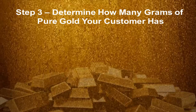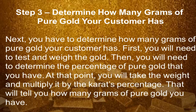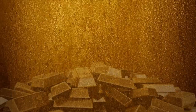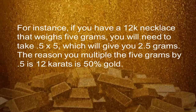Step 3: Determine how many grams of pure gold your customer has. You have to determine how many grams of pure gold your customer has. First, you will need to test and weigh the gold and determine the percentage of pure gold. At that point, you will take the weight and multiply it by the carat's percentage — that will tell you how many grams of pure gold you have. For instance, if you have a 12k necklace that weighs 5 grams, you will multiply 0.5 times 5, which gives you 2.5 grams. The reason you multiply by 0.5 is that 12 carats is 50% gold.